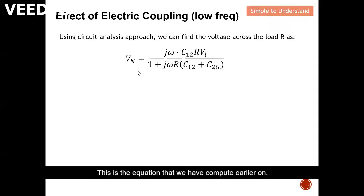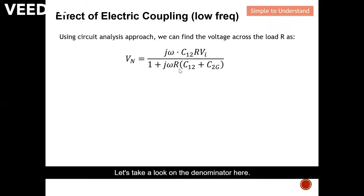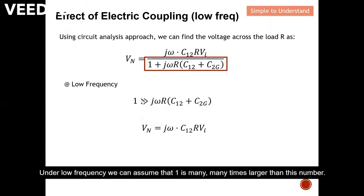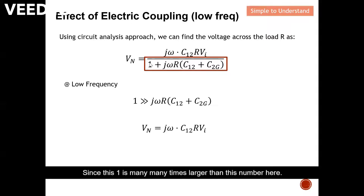This is the equation that we computed earlier. What we want to understand is the behavior at low frequency. Looking at the denominator: when frequency is low, omega (which equals 2πf) is small, and the capacitor term is also a very small number. Under low frequency, we can assume that 1 is many many times larger than that term, so the whole denominator term can be approximated as 1.